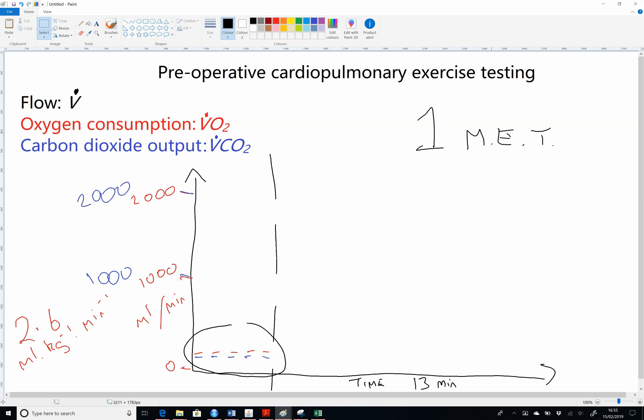When people got round to measuring how much oxygen people consumed, they realized that it was less than the 3.5 milliliters per kilogram per minute that the MET is defined as.